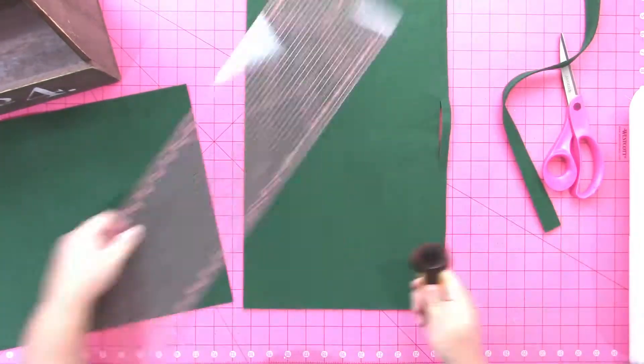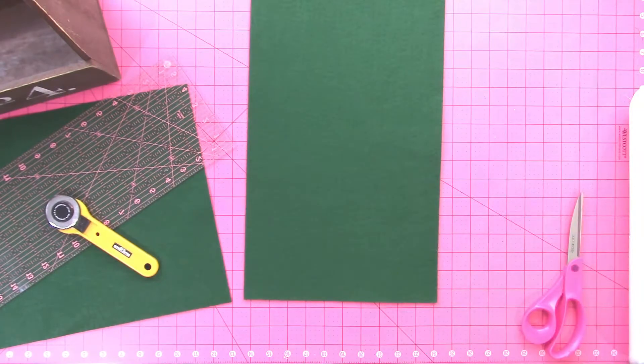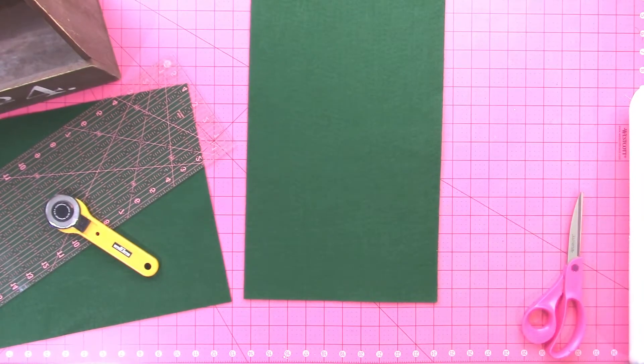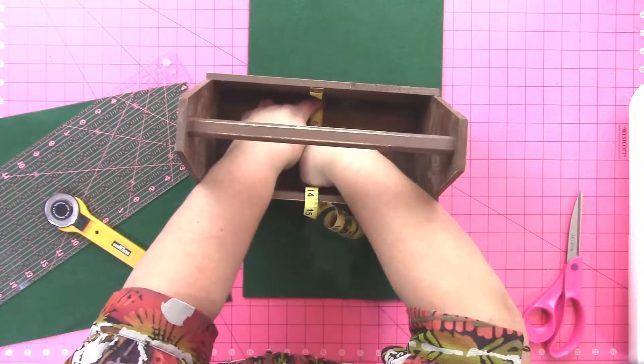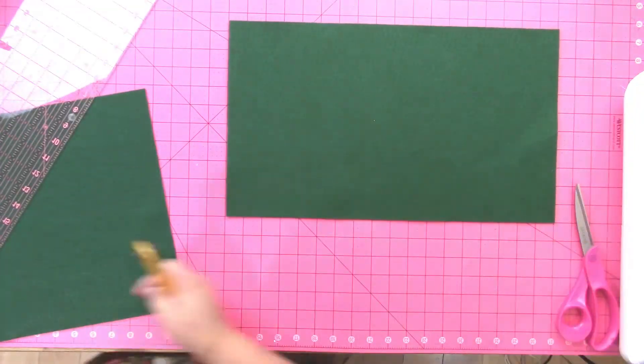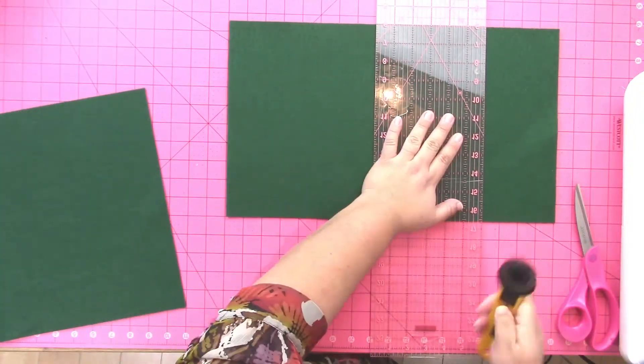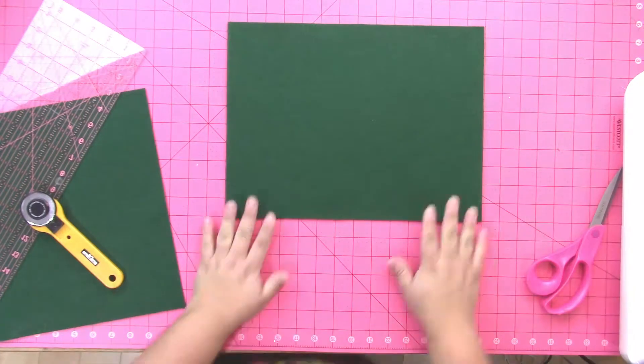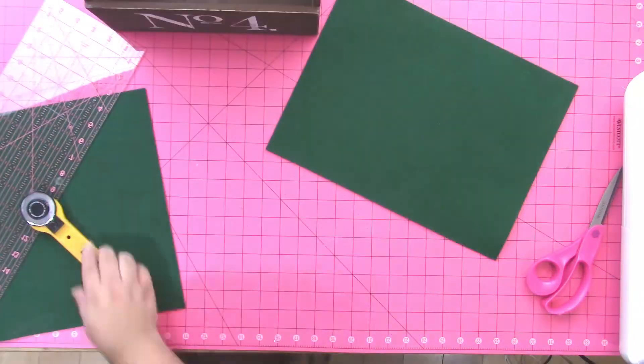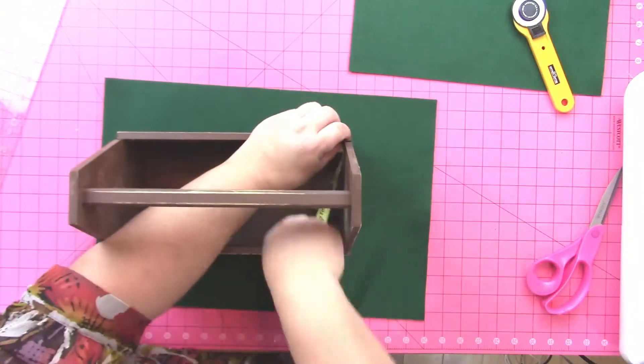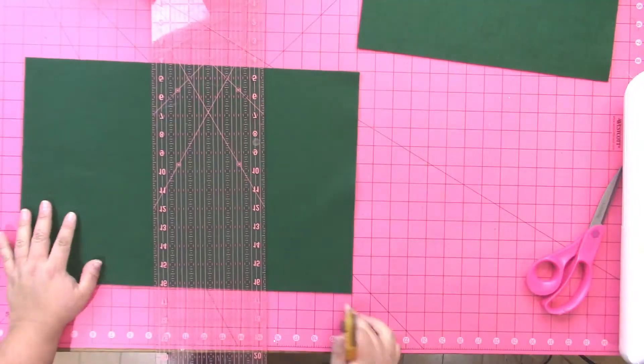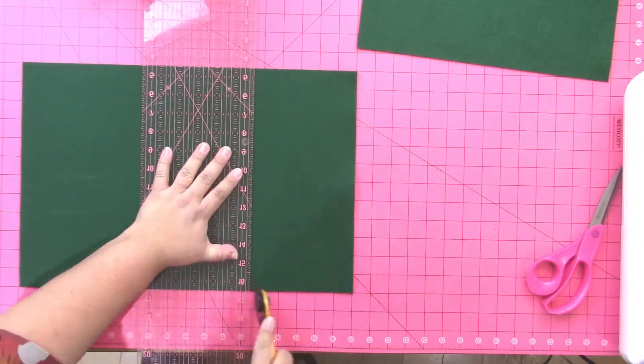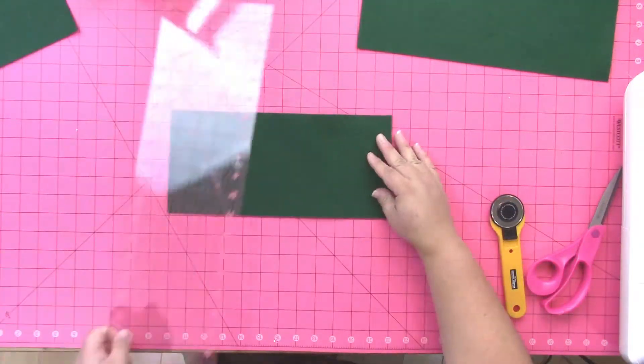What I did here is I measured the width of the inside of the tote so that I could cut a strip of felt to that same width. And then I'm using a measuring tape to measure down one of the sides, across the bottom, and up one of the sides on the inside so that I know how big to cut the piece of felt that's basically going to form a U-shape inside of the tote.